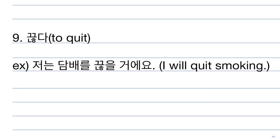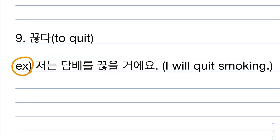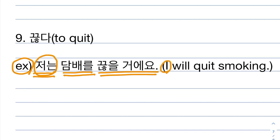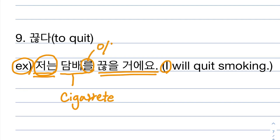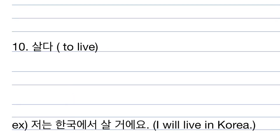Number nine. 끊다 means to quit. Example: 저는 담배를 끊을 거예요. 저는 is 'I', 담배 is cigarette — a noun — 담배를 with the object particle, 끊을 거예요 means will quit. So 저는 담배를 끊을 거예요 means 'I will quit smoking.'